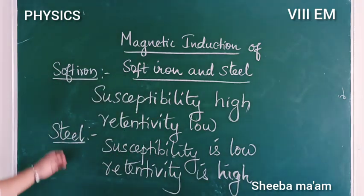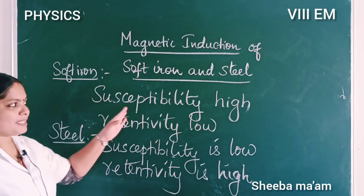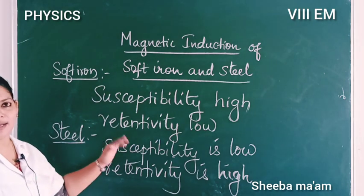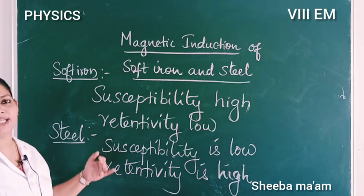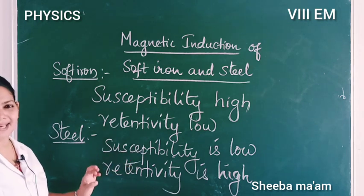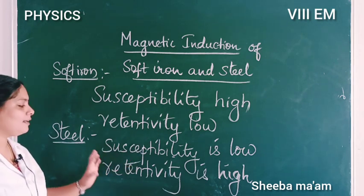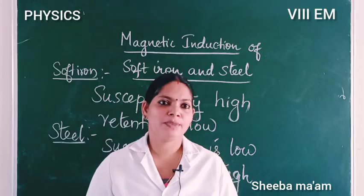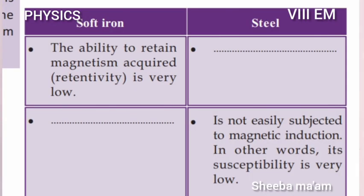Steel has high retentivity. Now look at this table. For soft iron, the ability to retain magnetism acquired is very low. For steel, the ability to retain magnetism acquired is very high.